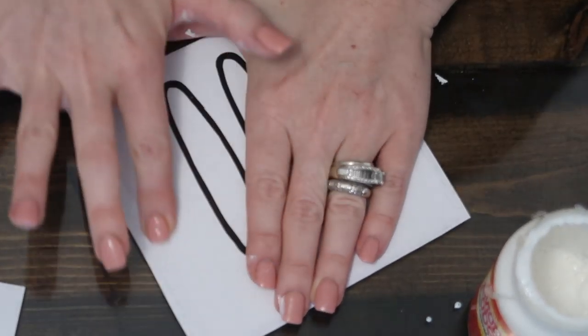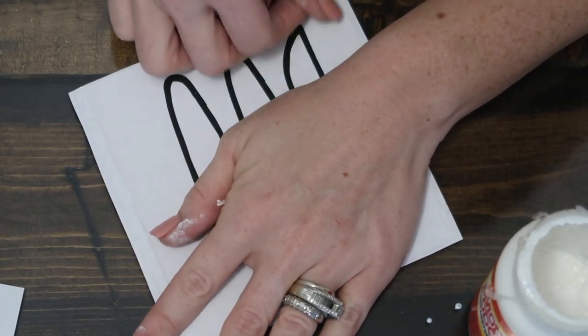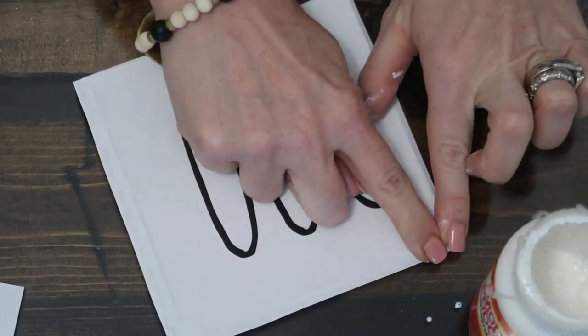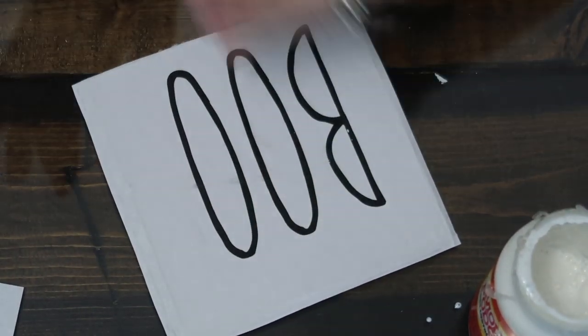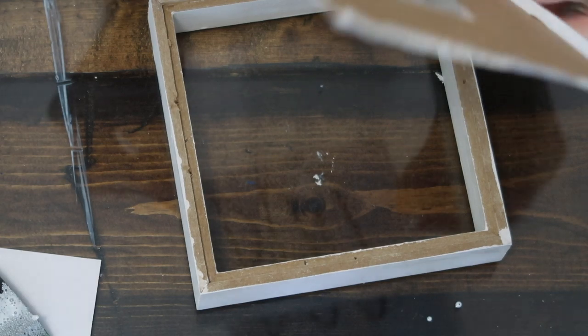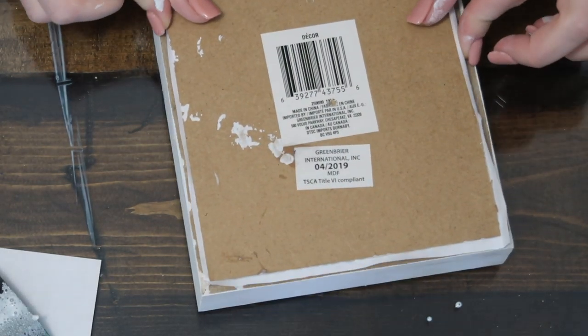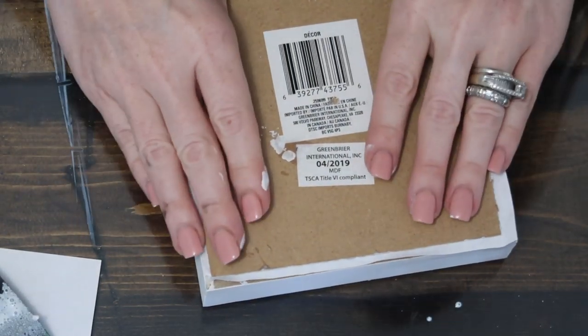When you are smoothing out any of the bumps, make sure you do not rip the paper. With it being wet on the back it is really easy to do that. I'm going to fold and crease the extra paper on the sides here. As you see when I lay it down, a little bit is going to be poking out, but that is okay.